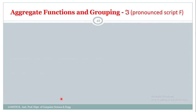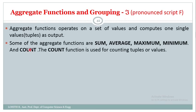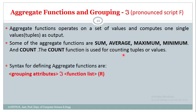Coming to the very important concept in relational algebra — aggregate functions and grouping of attributes — this is done using the notation called script F. Some of the aggregate functions are: sum, average, maximum, minimum, and count. The count function is used to count the number of tuples in a relation. The syntax is: grouping attributes, then the script F notation, then the function list, and the relation.